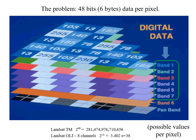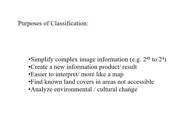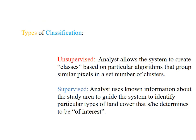This complexity is a problem we have to solve in a way that produces useful information — useful to us and to others who may not be able to work with these data directly. The purposes of classification are to simplify complex image information, create new information and value, make it easier to interpret, find known land covers in areas that are not accessible, and to analyze environmental, cultural, or human change.